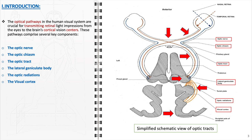Each segment of this pathway is critical. The optic nerve carries visual information from the retina. The optic chiasm allows for the crossing of nerve fibers, contributing to binocular vision, and the optic tract acts as a bridge conveying signals to various brain areas. The lateral geniculate body serves as a relay center, processing and directing visual information to the appropriate regions. The optic radiations then transmit these signals to the visual cortex, where complex processing results in the perception of images.